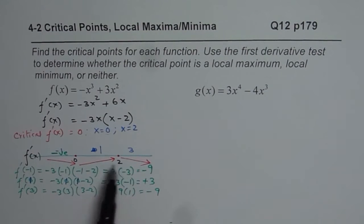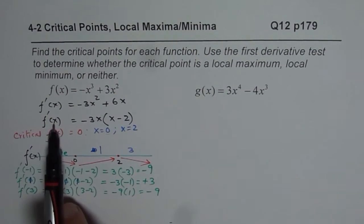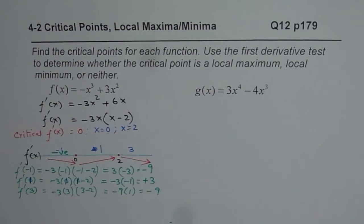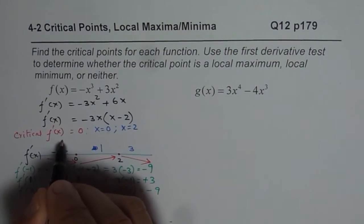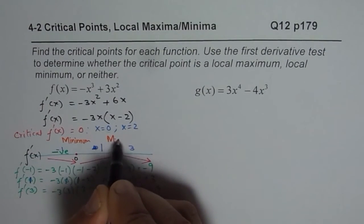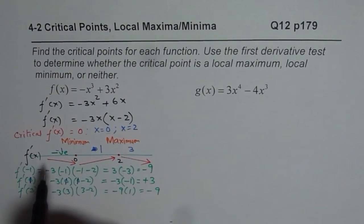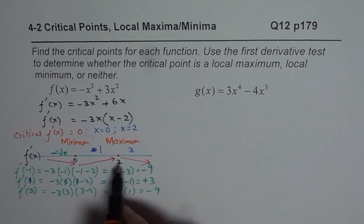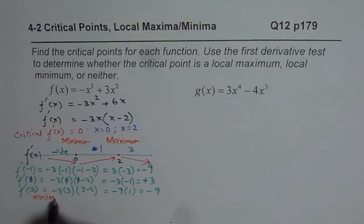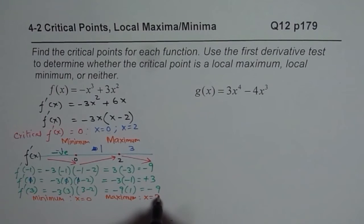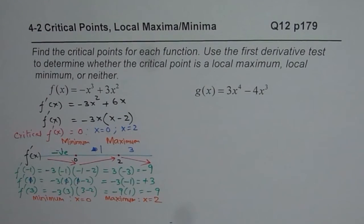As we can clearly see, at x equals 0 we have a local minimum, since the derivative changes from negative to positive — that is, from decreasing to increasing. At x equals 2, we have a local maximum, since the derivative changes from positive to negative — increasing to decreasing. So: local minimum at x equals 0, local maximum at x equals 2.